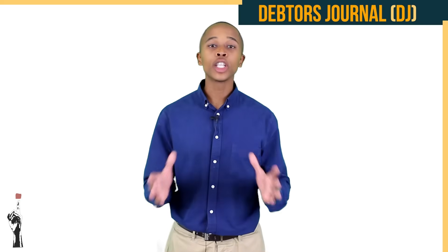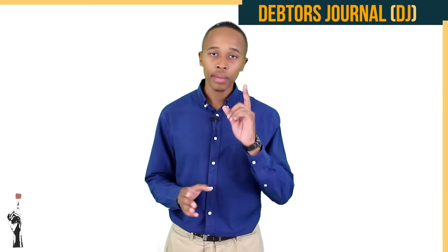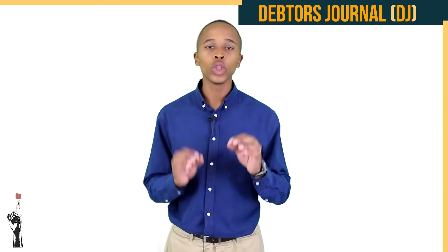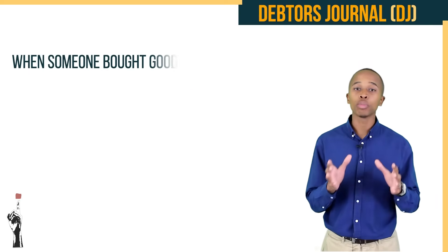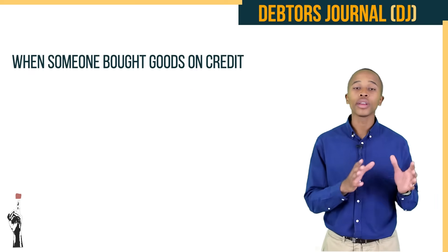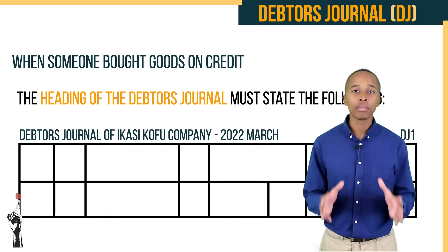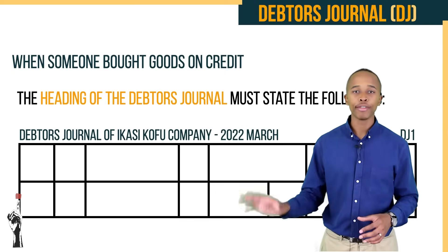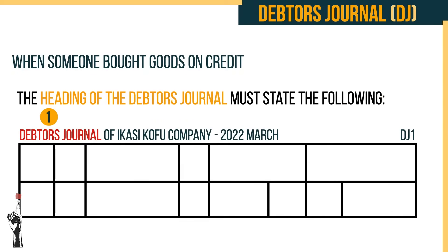Now let's look at the debtor's journal. Remember, we use the debtor's journal when someone has bought goods on credit. The heading of the debtor's journal must state the following: firstly, the name of the journal; secondly, the name of the business; thirdly, the month and year; and lastly, the folio number.